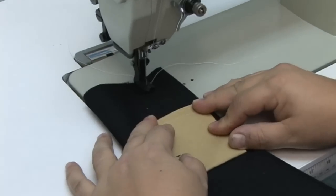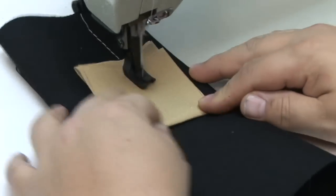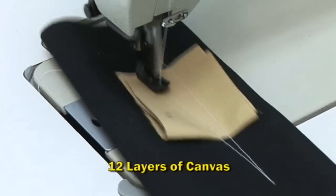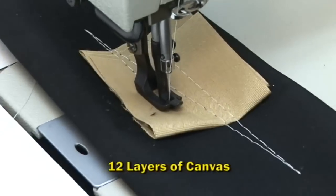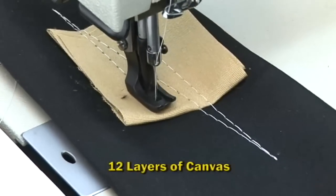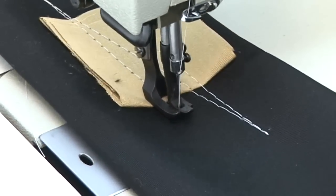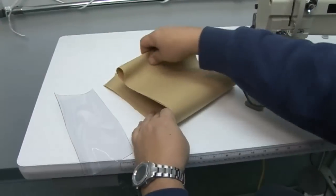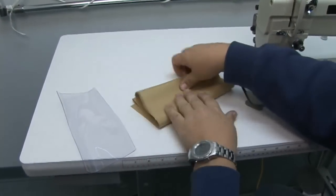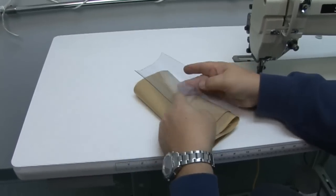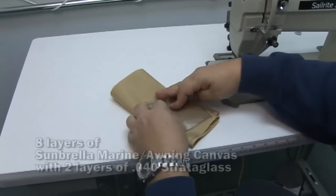Here's 8 layers of Sunbrella with 4 layers on top of that making 12 layers. We can go back and forth over this assembly without breaking needles. And with the MCSER power system we can do one stitch at a time. You've got tons of power and we're not touching that balance wheel.